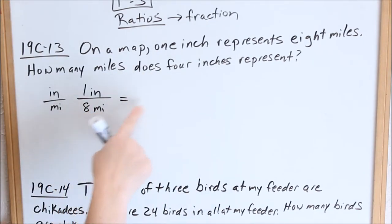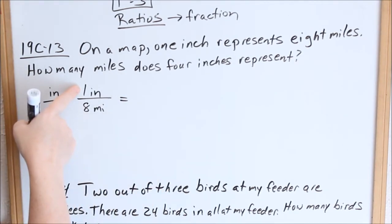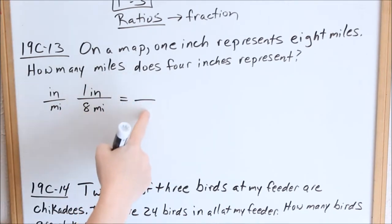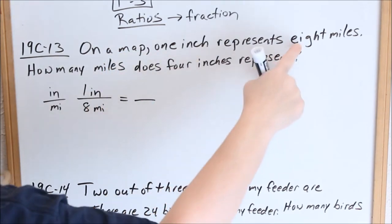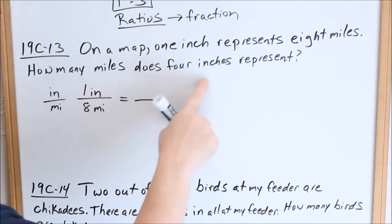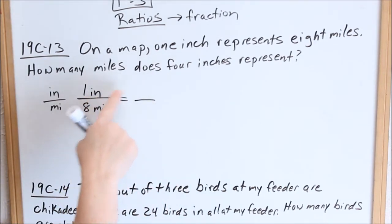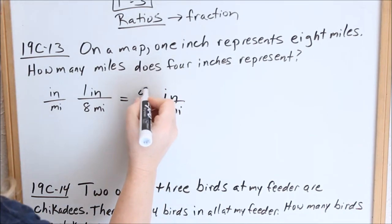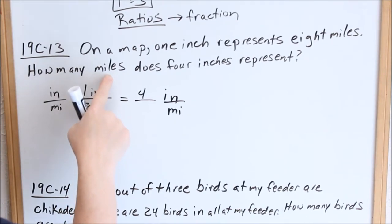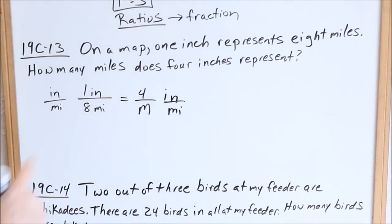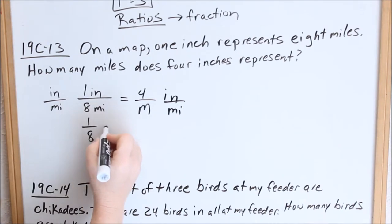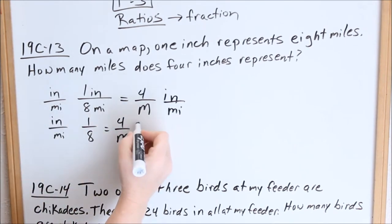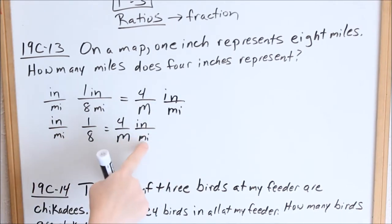When setting one fraction equal to another, everything has to be in the same place. If inches is in the numerator on this side, then inches has to be in the numerator on the other side too. So we make another fraction with the new information: four inches in the numerator, and M for miles in the denominator, since miles is in the denominator on the first side. So we have one over eight equals four over M.